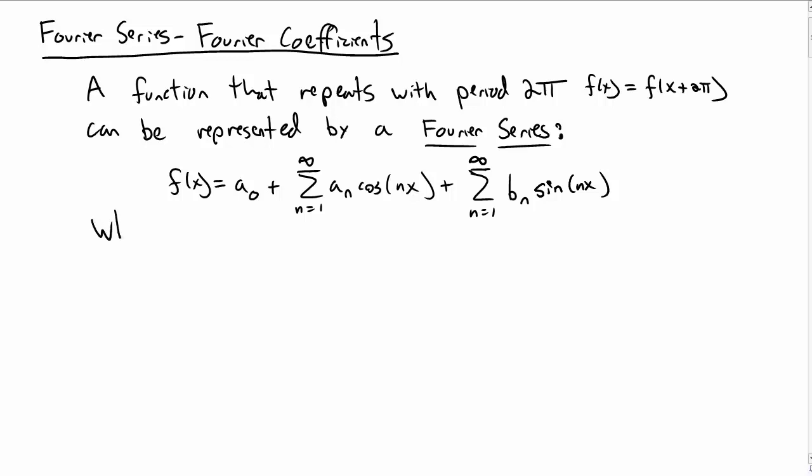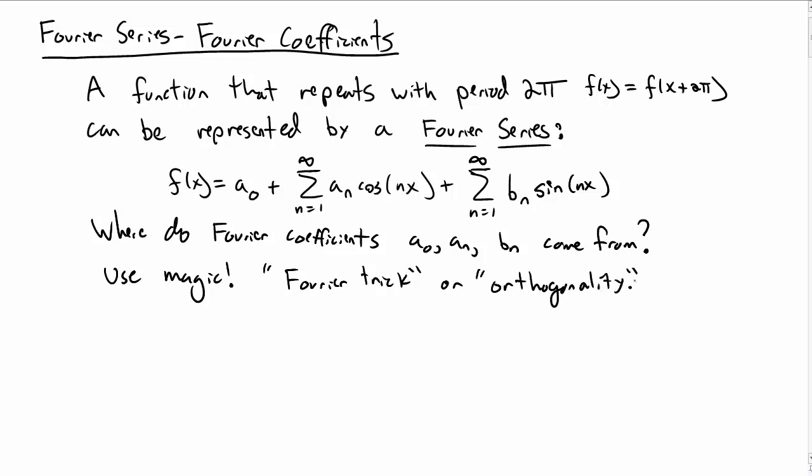Now you may ask the question that everybody asks themselves at some point in their life, which is where do Fourier coefficients come from? And so we can either ask our parents or we can try and derive it. In this video we're going to try and derive it. And we're going to use some magic, and the magic is named various things. You could call it the Fourier trick or oftentimes called orthogonality. Those are the tricks that we're going to use.